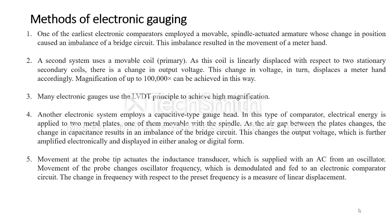One of the main disadvantages of the LVDT is that it is used for static measurements but not for dynamic measurements, because it contains more weightage of the core. Due to the higher inertia of the core movement, it cannot be used for dynamic measurements.